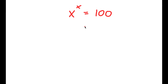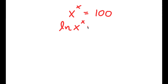In this problem, I have x to the power of x is equal to 100. I'm going to first start by taking the natural log, or ln, on both sides. So I have ln of x to the power of x is equal to ln 100.